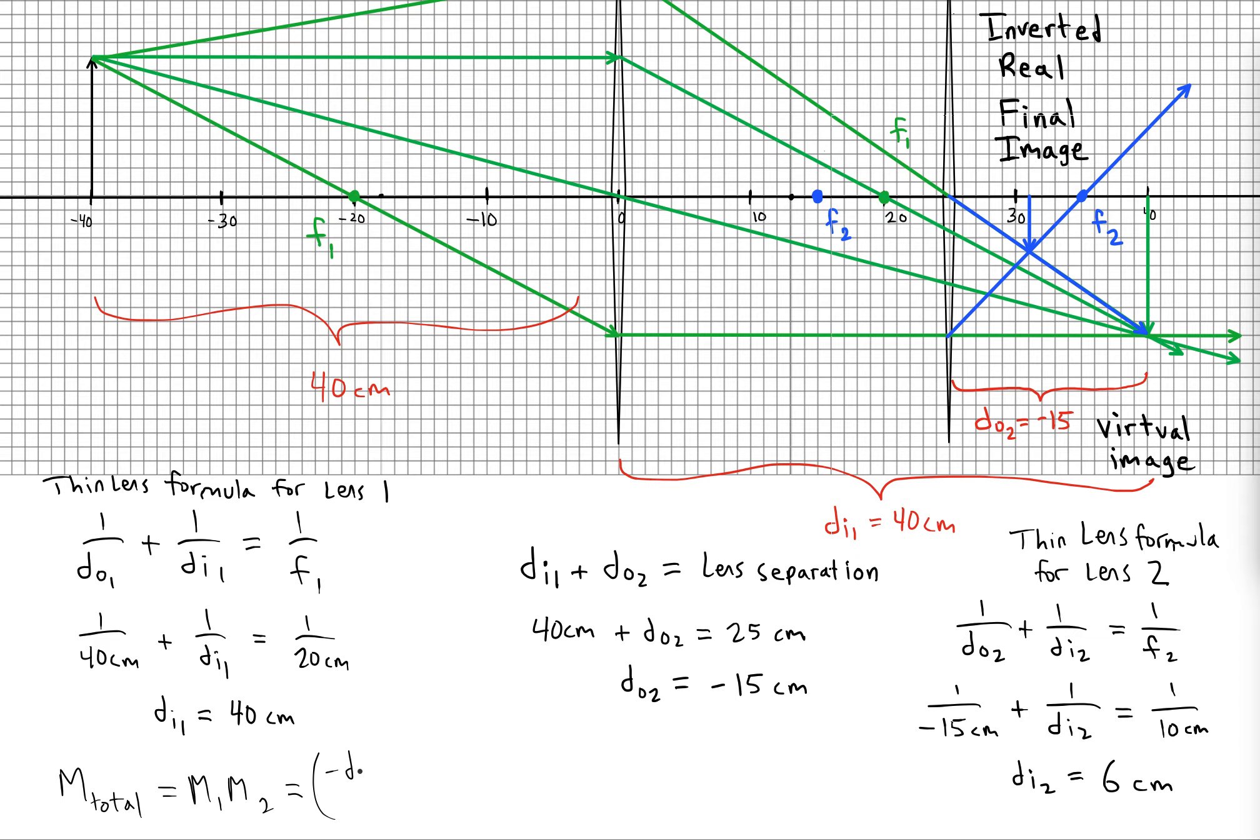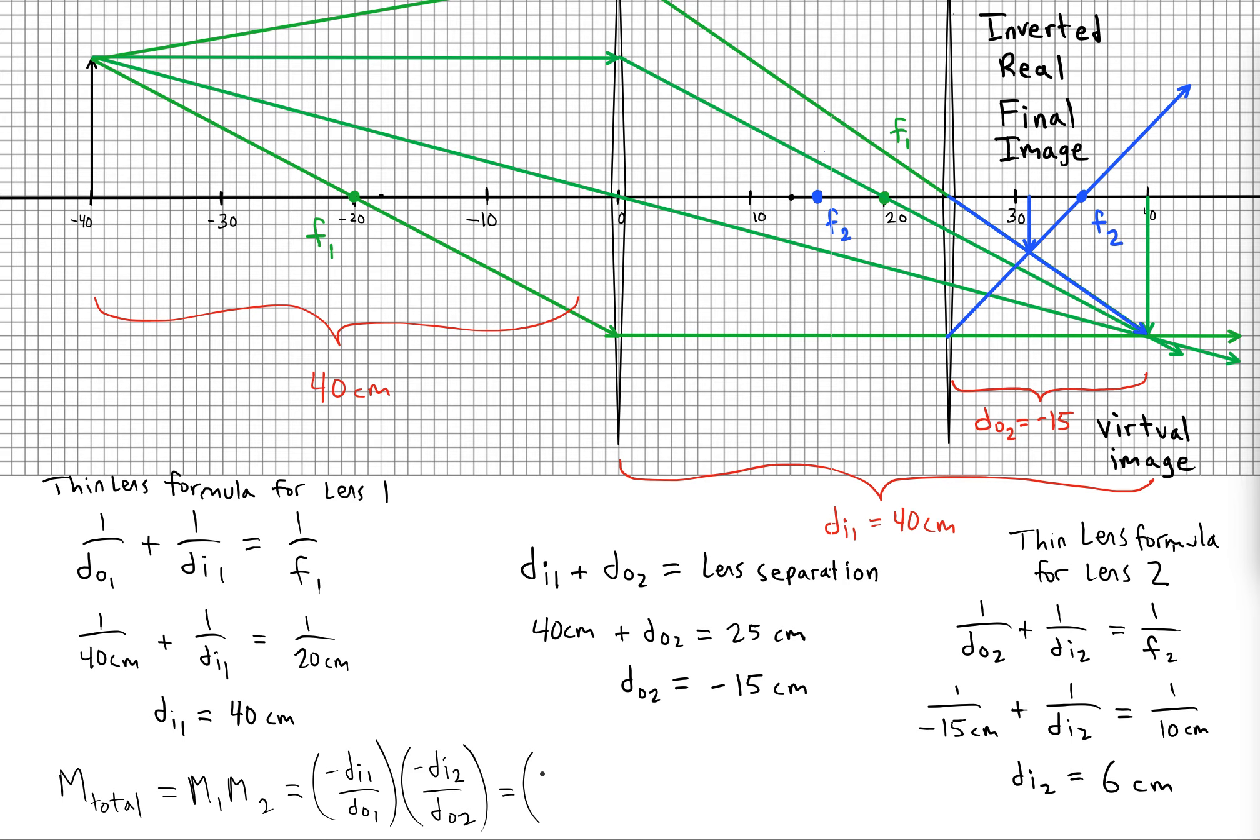So we would get negative 40 over 40 times negative 6 over negative 15. It ends up being negative 0.4 for a magnification.